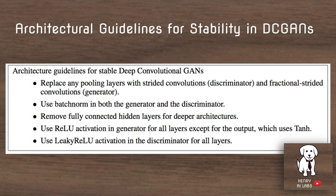These are the architectural guidelines presented in their paper: replace the pooling layers with convolutions; use batch normalization in both the generator and the discriminator, but specifically do not use batch normalization right at the input to the generator or right before the output to the discriminator — for the exact details, you should read the paper. They also remove the fully connected layers, which are the multilayer perceptron layers, and then use ReLU in the generator and leaky ReLU in the discriminator.